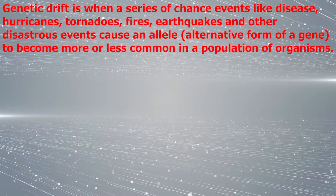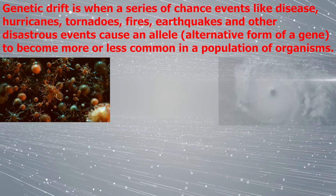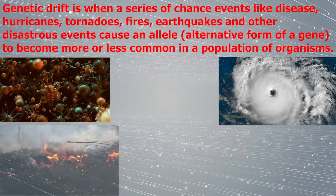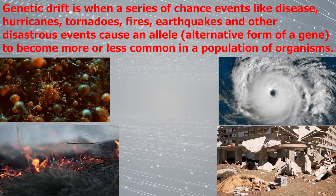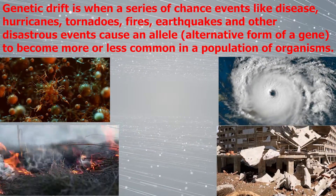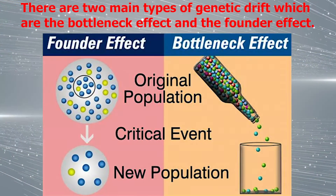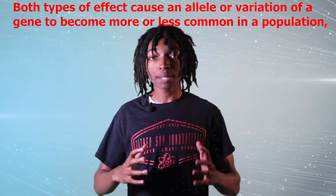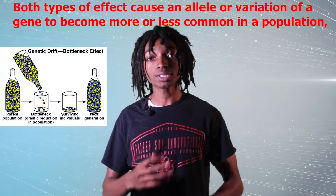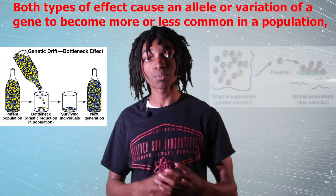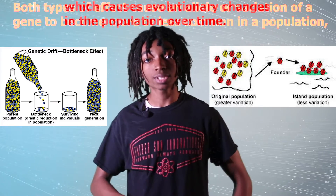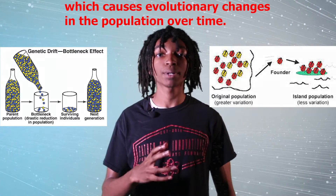Let's first start off answering the question: what is genetic drift? Genetic drift is when a series of chance events like disease, hurricanes, tornadoes, fires, earthquakes, and other disastrous events cause an allele — which is an alternate form of a gene — to become more or less common in a population of organisms. There are two main types of genetic drift: the bottleneck effect and the founder effect. Both types cause an allele or variation of a gene to become more or less common in a population, which causes evolutionary changes over time.